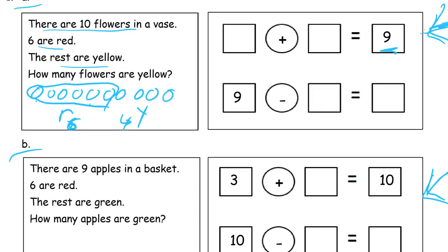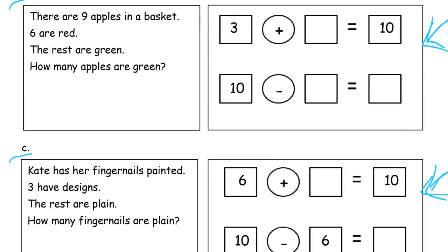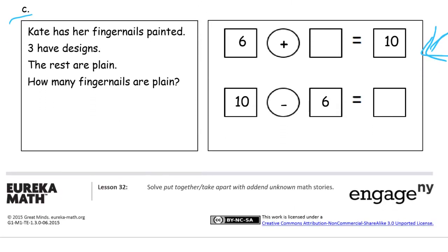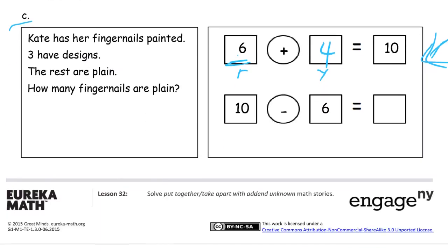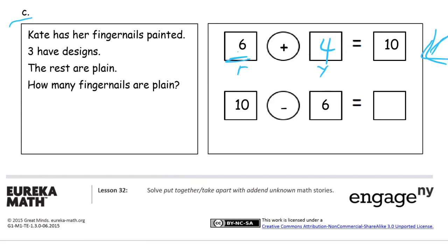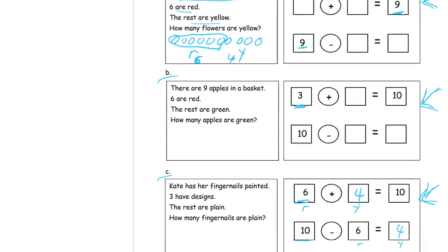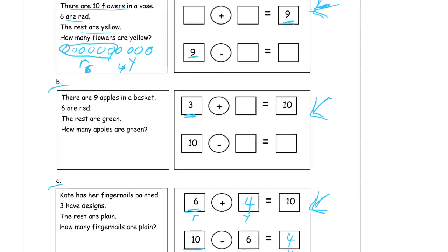It's not going to be the number sentence with a nine, because we need a six, a four, and a ten. The one with a three can't be it either. So it's going to be the last one at the bottom — it has the six already in it, so we needed the four yellow ones. Six red and four yellow. If you take the ten total flowers and subtract the red ones, you should have all the yellow ones left: four. So this math story matches that set of number sentences.